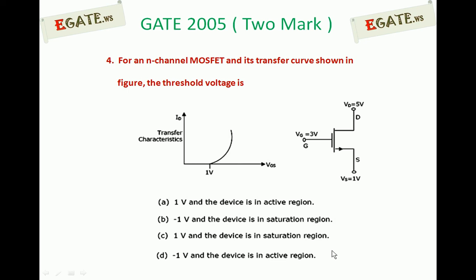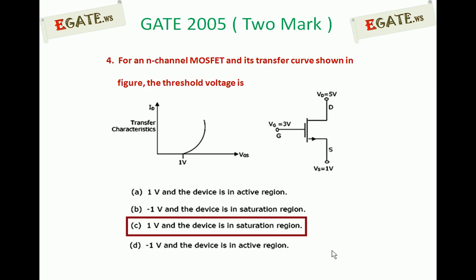We need to find out what is the threshold voltage and what is the region of operation of this N-channel MOSFET. The correct answer for this one is C. We will see the details. First of all, we should know the equation for the definition of threshold voltage.